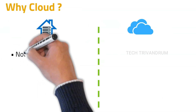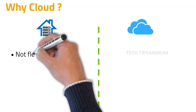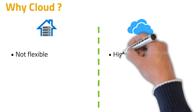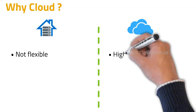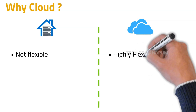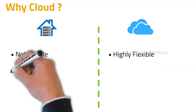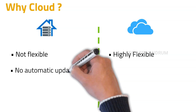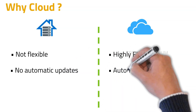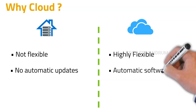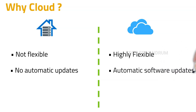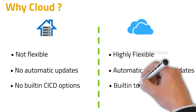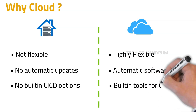The on-premises environment itself is not flexible — if we need to do any redesigning of our IT environment, it is very difficult in the on-premises setup. But in the cloud, it is highly flexible and we can easily redesign our IT infrastructure with less effort. Regarding software updates, we need to take care of every software update ourselves in on-premises. But in the cloud environment, those things are taken care of by the vendor. And regarding continuous integration and continuous deployment, there are no built-in options in the on-premises setup, but on the cloud environment there are a number of tools for the easy delivery of CI/CD.